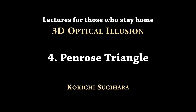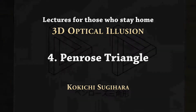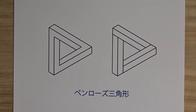This is a series of lectures on 3D optical illusions for those who stay at home. Today's topic is a Penrose triangle. These pictures are called impossible objects because when we see those pictures we have an impression of 3D structures, but at the same time we feel that such a 3D object cannot be realized as a real object, because this object consists of three bars connected at corners but they are twisted.